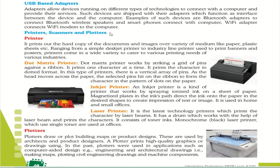Next is the printer, scanner, and plotter. A printer prints out a hard copy of documents and images over various media like paper or plastic sheets, ranging from simple inkjet printers to industrial line printers used to print banners and posters. There are various types of printers: first is the dot matrix printer, which prints using dots by striking a grid of pins against a ribbon, printing characters in dotted format. You can see examples of dot matrix printers at railway station counters.